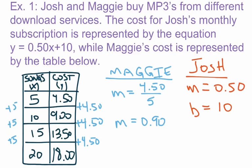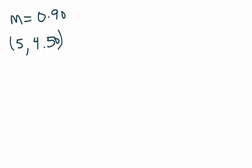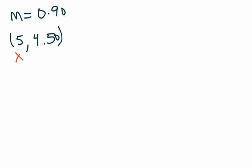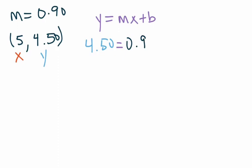To find Maggie's y-intercept, we use her rate of change of 0.90 and one of the ordered pairs from the table. Using the ordered pair (5, 4.50), we substitute into y equals mx plus b: 4.50 equals 0.9 times 5 plus b. On the right side, 0.9 times 5 gives us 4.50, so we have 4.50 equals 4.50 plus b.